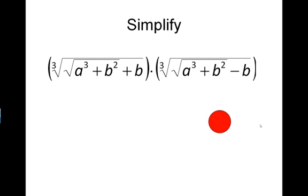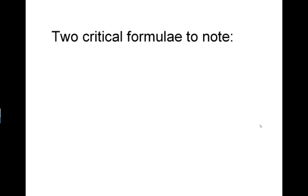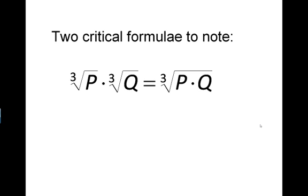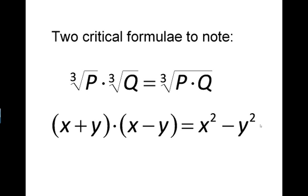But it's really quite simple if we remember two critical formulas. The first one: the cube root of p times the cube root of q equals the cube root of p times q. And the second one is the very familiar one: x plus y times x minus y equals x squared minus y squared.